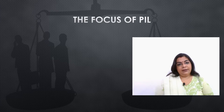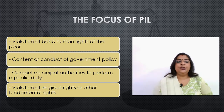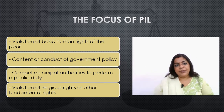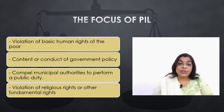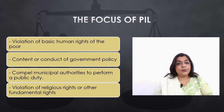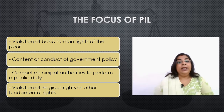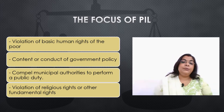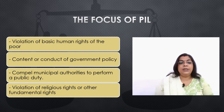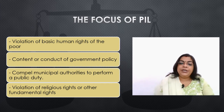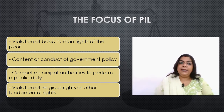What is the focus of PIL? Basically, there are four major things which are important to understand. First, if there is a violation of basic human rights, then a PIL can be filed. Similarly, if there is any problem or issue related to the content or conduct of government policy — both content and conduct are important — then also a PIL can be filed. Then, if there is any problem related to compelling municipal authorities to perform a public duty, a PIL can be filed. Also, if there is a violation of religious rights or other fundamental rights, a PIL can be filed.